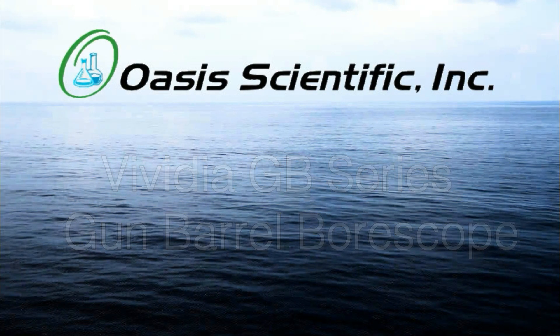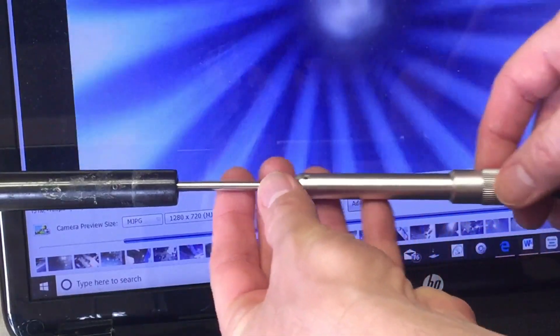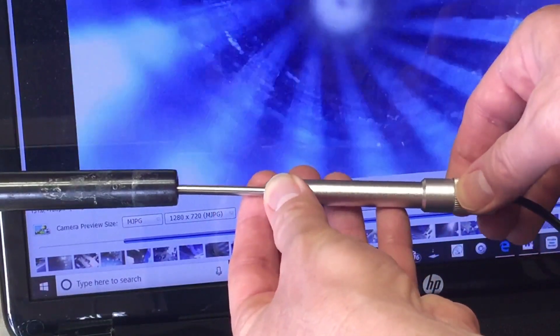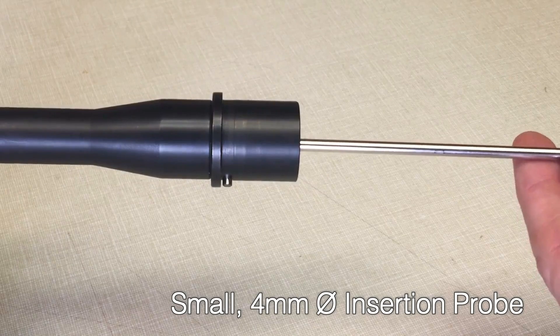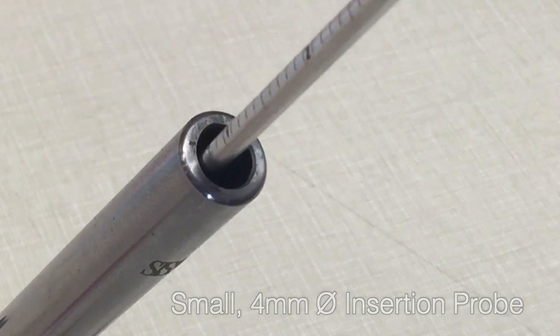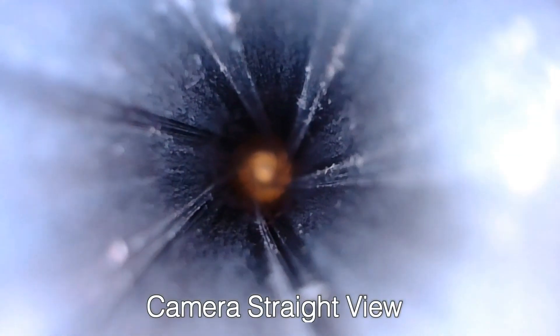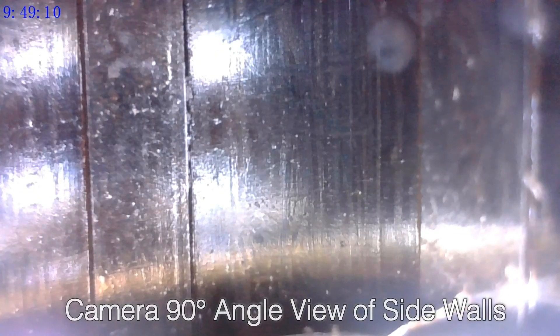The Vividia GB Series Gun Barrel Boroscopes are high-quality, USB-connected, small-diameter boroscopes which can be used to connect to computers and other devices for viewing rifle and handgun barrels from a straight or 90-degree view.